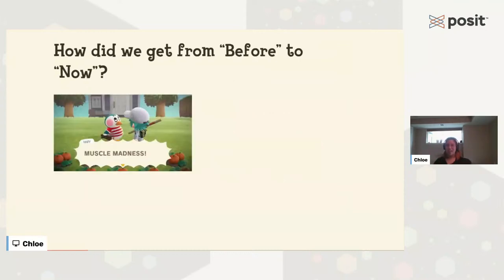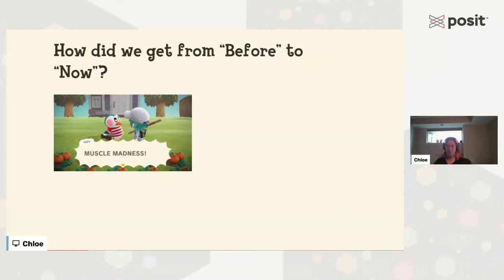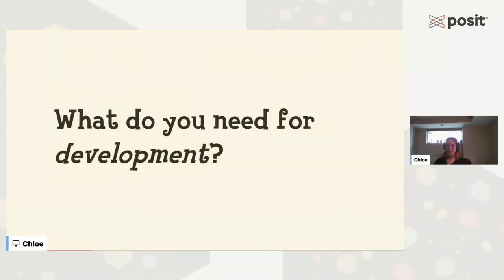So how do we get from before to now? I'd say it's a combination of hard work, trial and error, lots of talking, talking to the right people, figuring out what works and also what doesn't work. Out of all the tools and findings, we can summarize them into two categories: tools for development and tools for deployment. Let's dive right in to what you need for development.